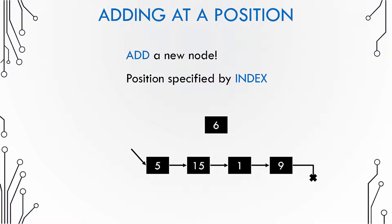So in this case I want to add a node at position number 3 but there is already an element present at position number 3 which is 1. So how do you manage to add a new element without disturbing the linked list.